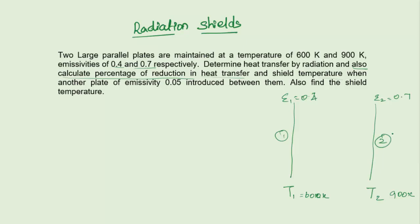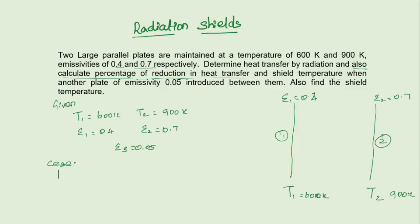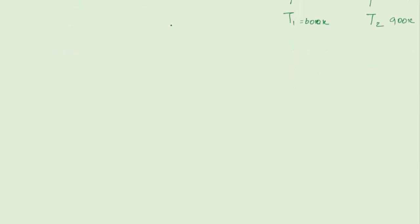In Case 1, we find how much energy passes from surface 1 to surface 2 without a radiation shield. In Case 2, we introduce a radiation shield between the two plates and find out how much the radiated energy is reduced. The given data: T1 = 600 K, T2 = 900 K, epsilon 1 = 0.4, epsilon 2 = 0.7, and epsilon 3 = 0.05.